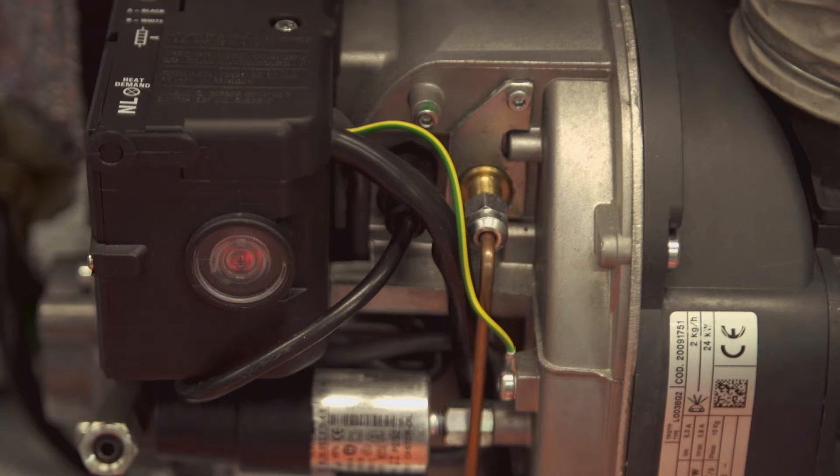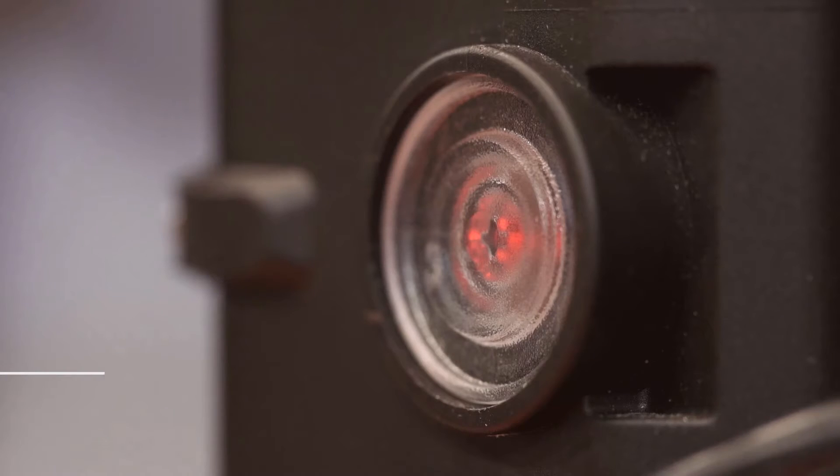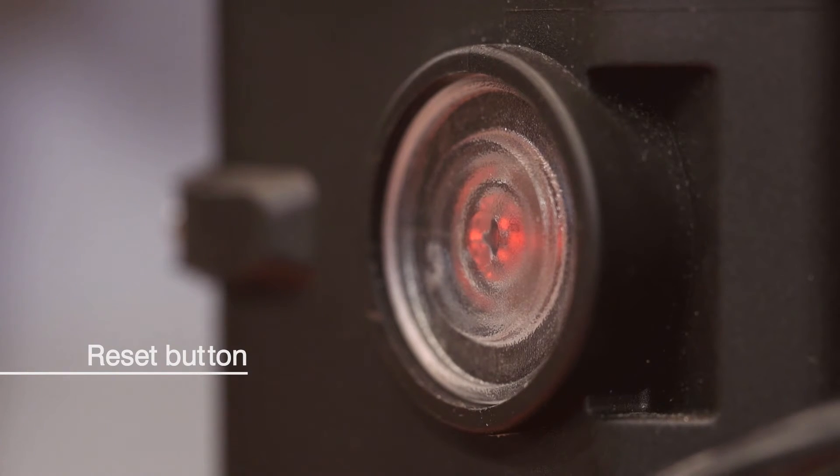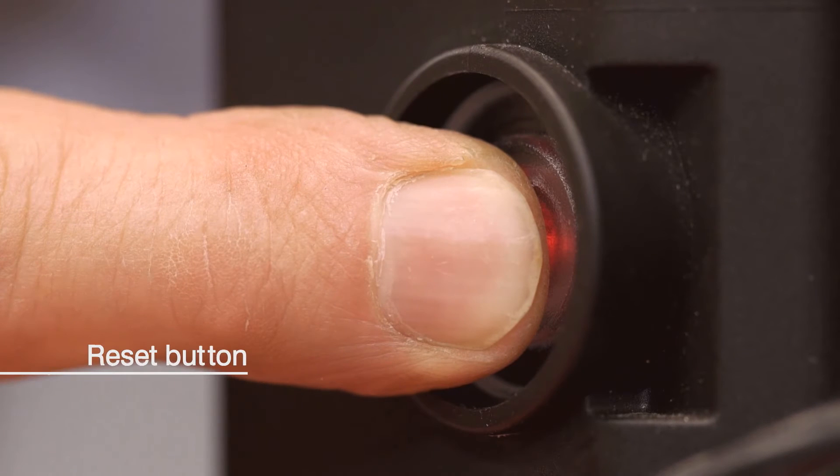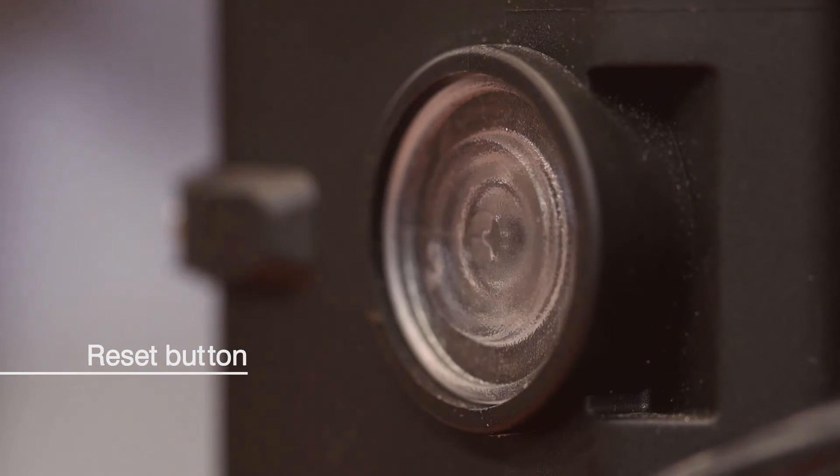Other operating modes and faults are indicated by different colors. Check in the installation instructions for details. Just one thing, on this control box, to operate the reset button, you have to press and briefly hold it in before releasing.